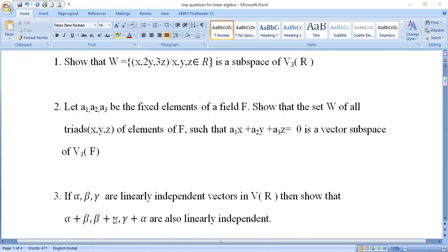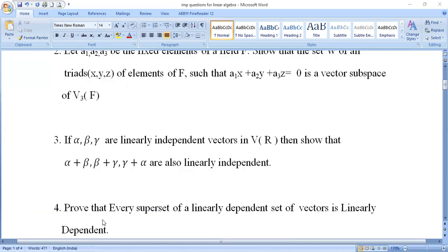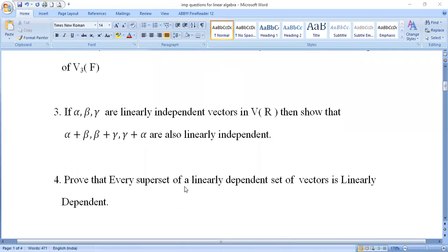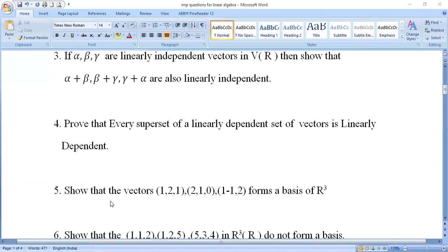Fourth question: Prove that every superset of a linearly dependent set of vectors is linearly dependent. The scalars must not all equal zero - some scalars not zero makes it linearly dependent.